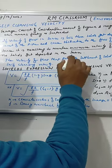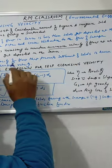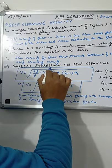So there should be a minimum velocity maintained so that no solids get deposited in the sewer. The velocity of flow that prevents settlement of solid is known as self cleansing velocity.